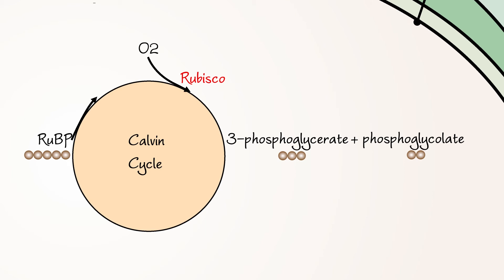Phosphoglycolate cannot continue in the Calvin cycle. Thus, it is broken down and its carbon units are released as carbon dioxide and wasted.